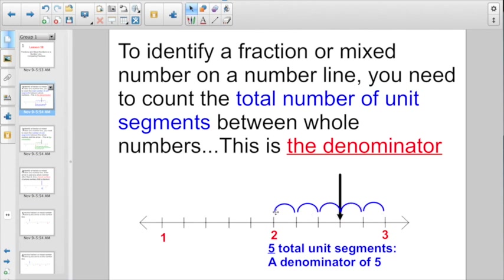Remember, the unit segment is the space. Don't go and count the lines. You're going to end up with the wrong number. You have to count the spaces. So you have 5 total unit segments between the whole number 2 and the whole number 3. So whatever fraction or mixed number you're writing is going to have a denominator of 5.